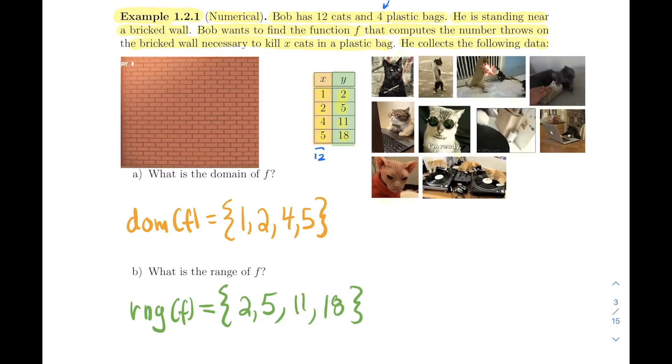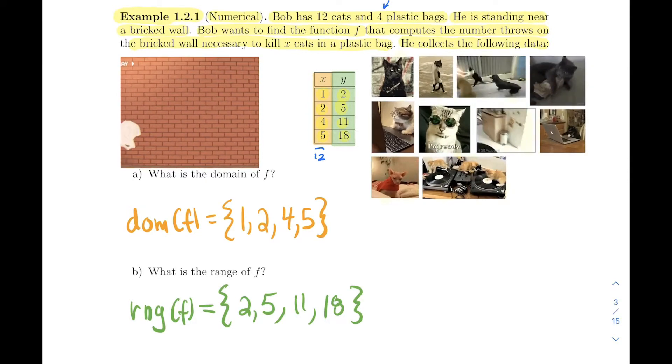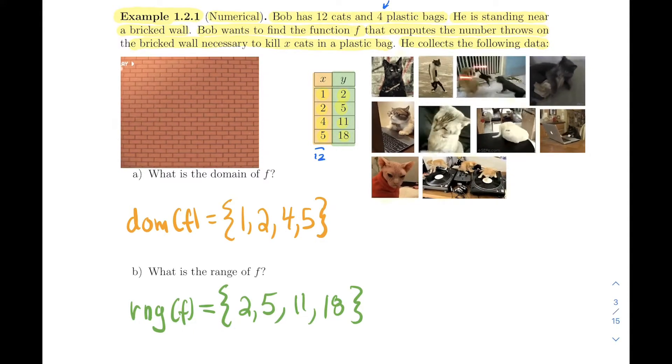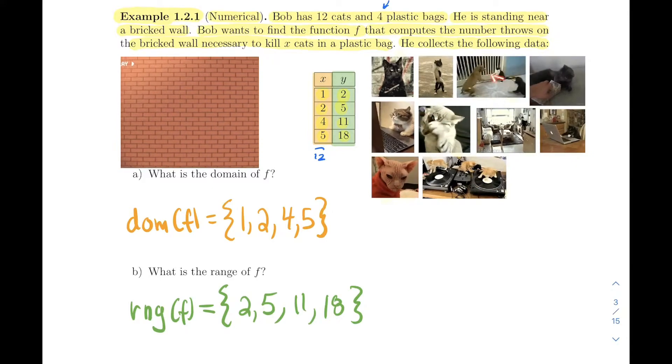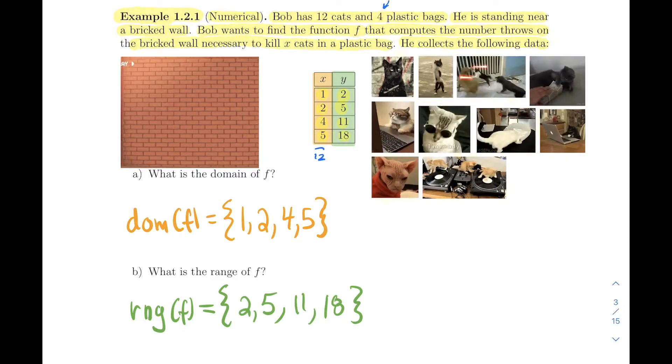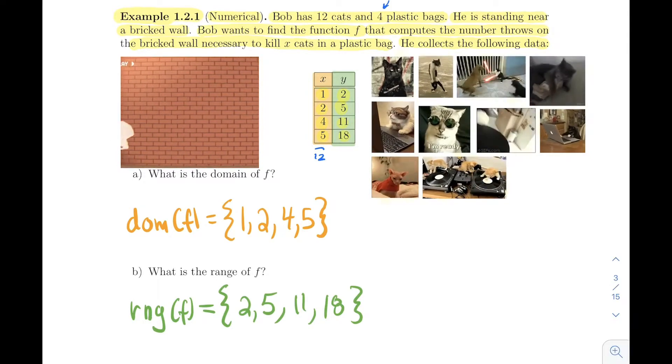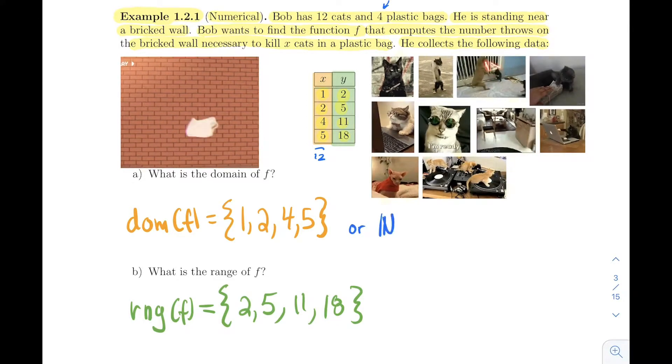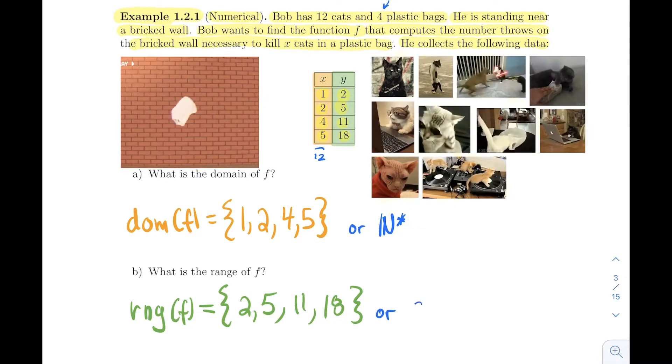The true domain for this question, you could argue, maybe it's the whole real numbers because you could have six, seven, eight cats. But maybe there's a maximum of cats you can put per bag, so maybe the domain is from one to a finite number. And the range would just adjust itself depending on the domain. It's clearly a subset of natural numbers.